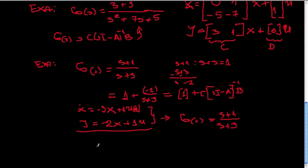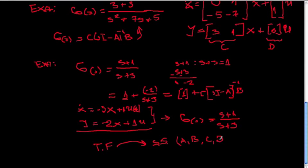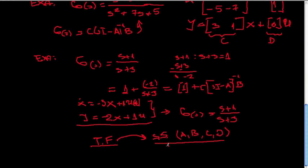In this way we saw that one can easily transform from the transfer function into state space by utilizing the formulas above to obtain A, B, C, D. Importantly, state space is not unique — the transfer function is unique — but there are many state space forms. One can transform to another form by using a change of coordinates x = Tz, yielding new A, B, C, D matrices with particular structure, such as a diagonal matrix.